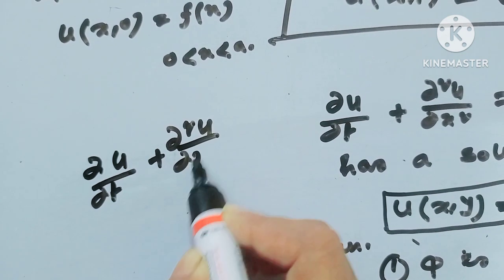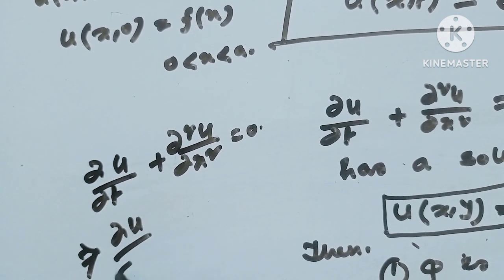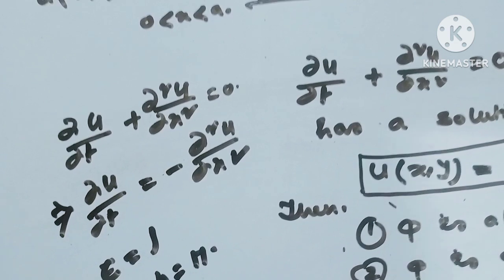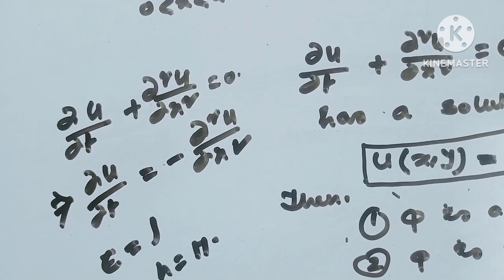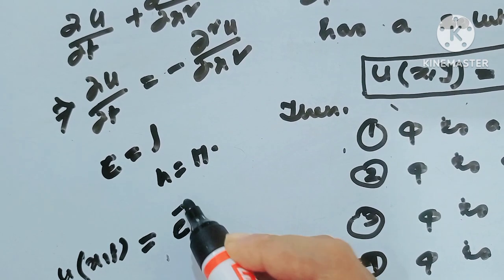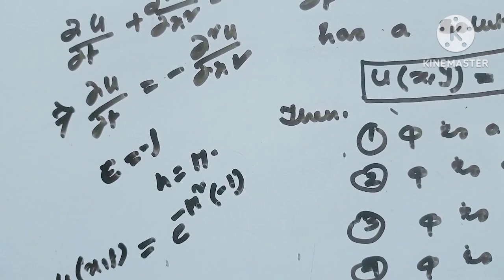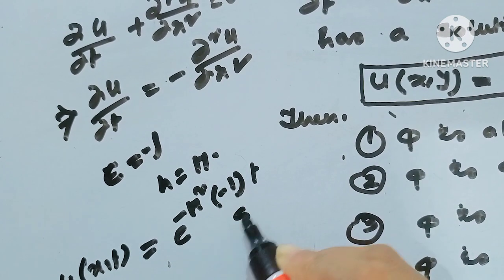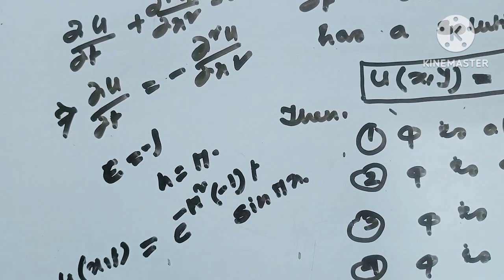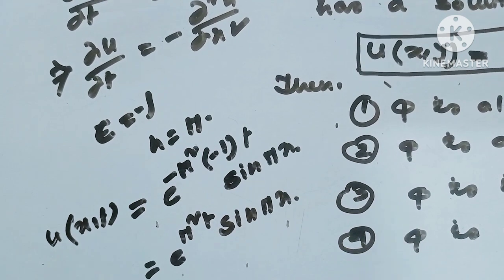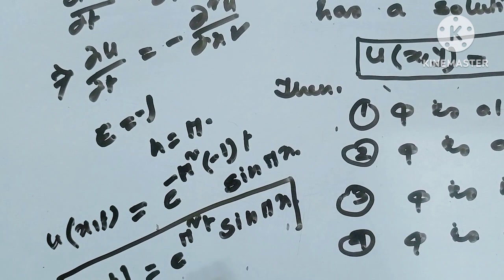Rewriting: del u / del t + del²u / del x² = 0, that implies del u / del t = − del²u / del x², meaning c = 1 (taking c = −1 corrected to c = 1 with the sign handled). Given u(x,0) = sin(πx), that means n = π. So the equation gives u(x,t) = e^(−π²t) * sin(πx). This is the value of u(x,t).